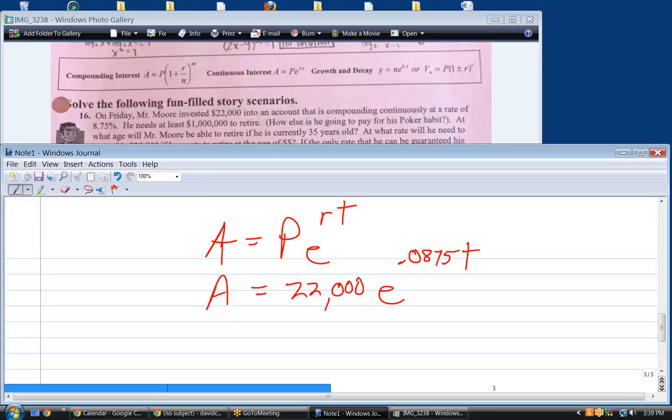So, his amount that he's going to have at any point in time is a function only of T. Okay. E is a number - E is the number 2.71 and change. But the only variable here is T. So, he needs at least a million dollars to retire. So, let's make the amount 1 million. And then we will have an equation that only has one variable in it.